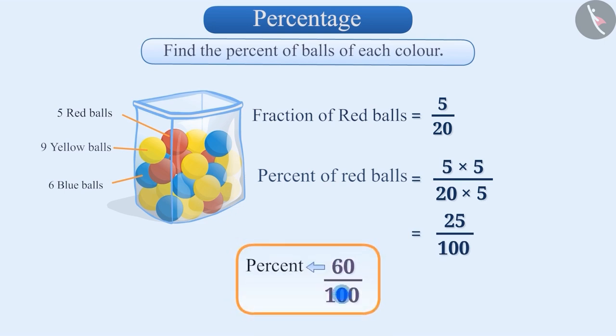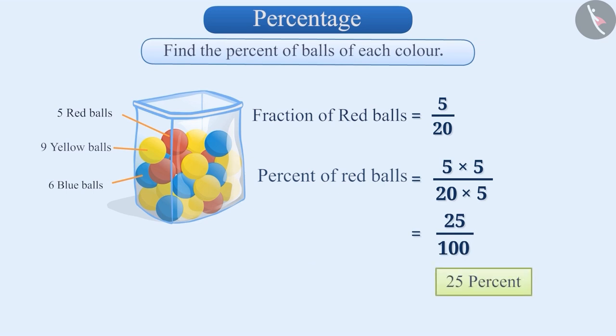Percent is the numerator of the fraction whose denominator is 100. In this fraction 25 by 100, the denominator is 100 and the numerator 25, so we will call it 25% and write it like this.